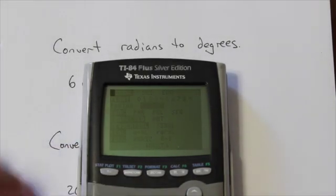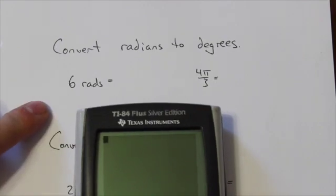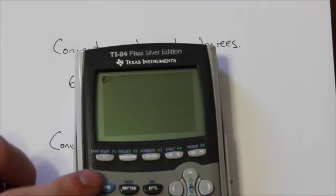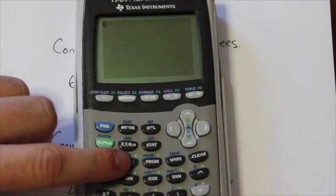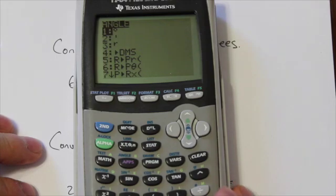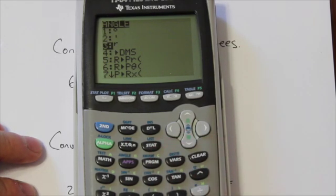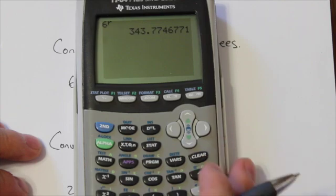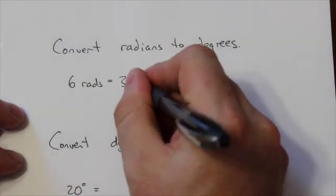Over to degree mode. Go back to the home window, and then what we're going to do is enter in 6. Then we're going to go 2nd Apps — right here — to get into our angle menu. We're going to go down and identify that that 6 is actually a radian. When we press enter, it will convert it to a degree measure. So this is essentially 344 degrees.